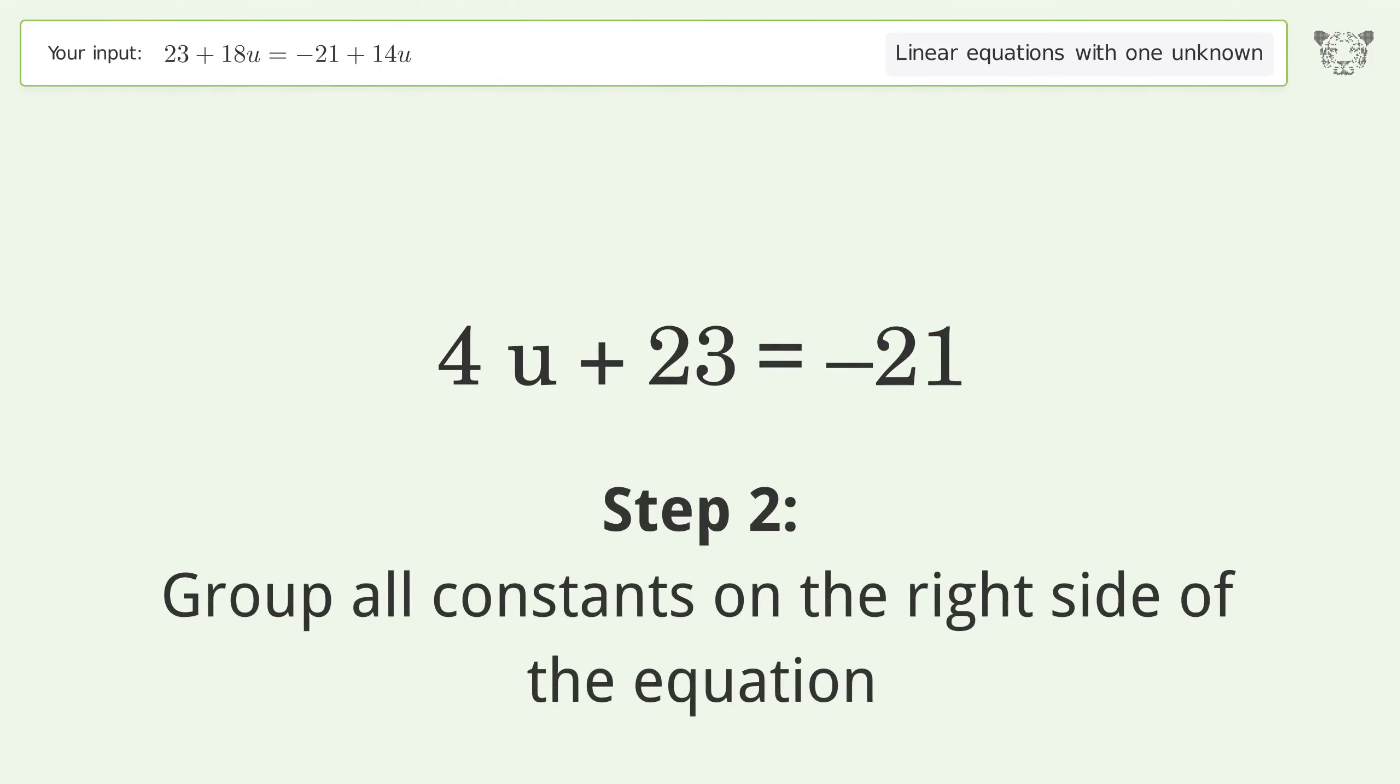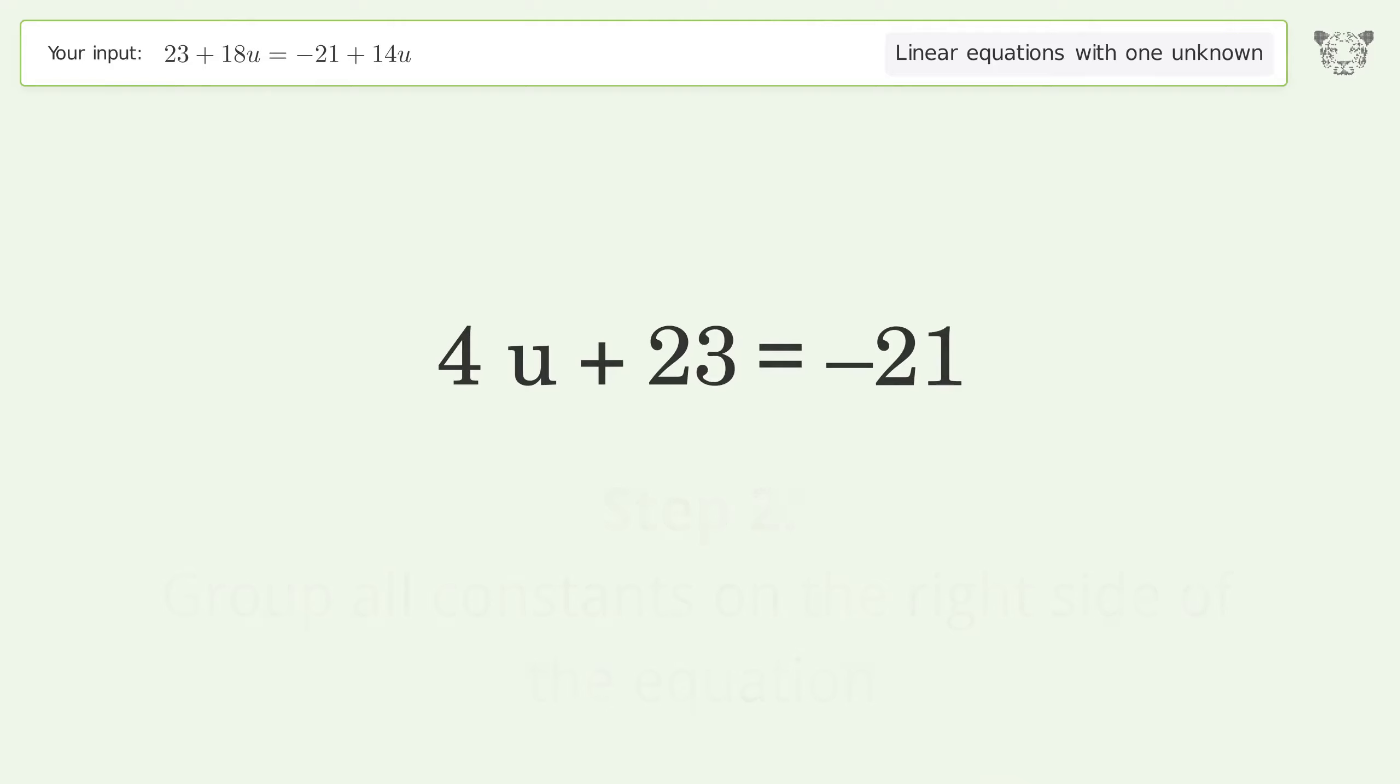Group all constants on the right side of the equation. Subtract 23 from both sides. Simplify the arithmetic.